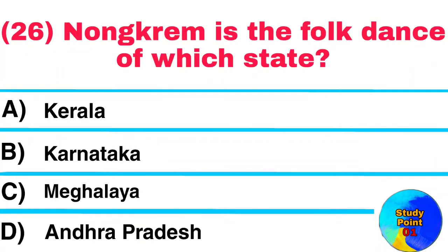Question No. 26. Nongkrem is the folk dance of which state? Answer: Meghalaya.